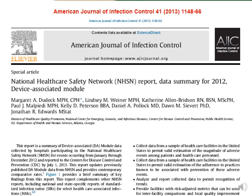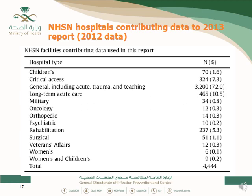This is one of the reports created by the American NHSN. They publish a data summary for the device-associated module, including CLABSI, VAP, and CAUTI. As you see, the different types of hospitals are contributing data in the 2012 NHSN data. The number is 4,000 plus hospitals, but the majority — almost 72% — are acute trauma teaching hospitals. All types are included: children, women, rehabilitation, and oncology.